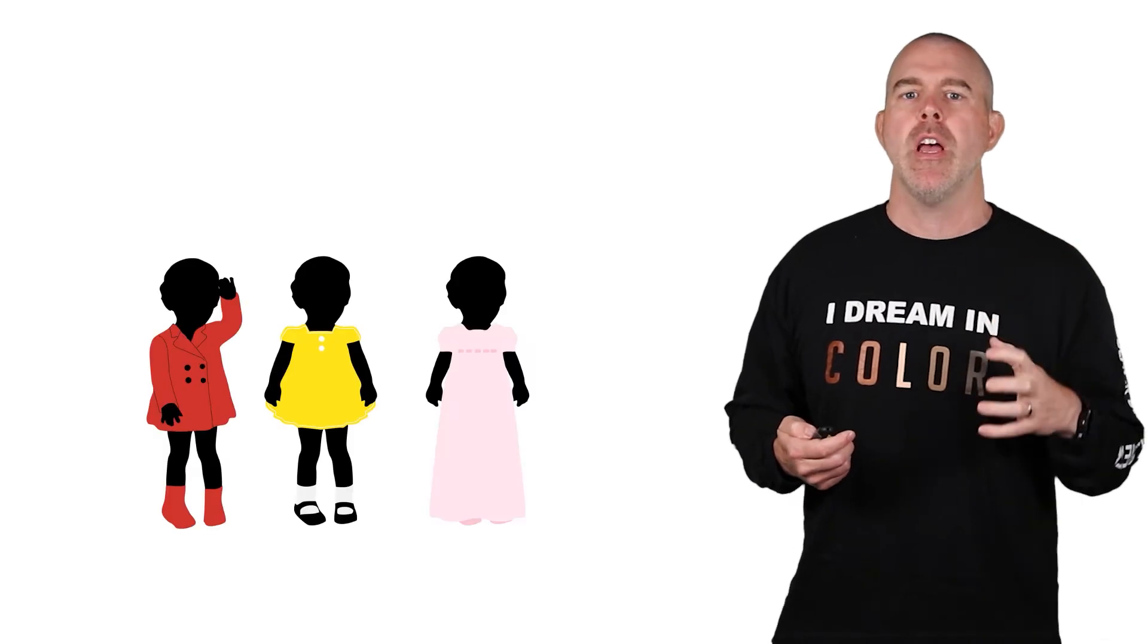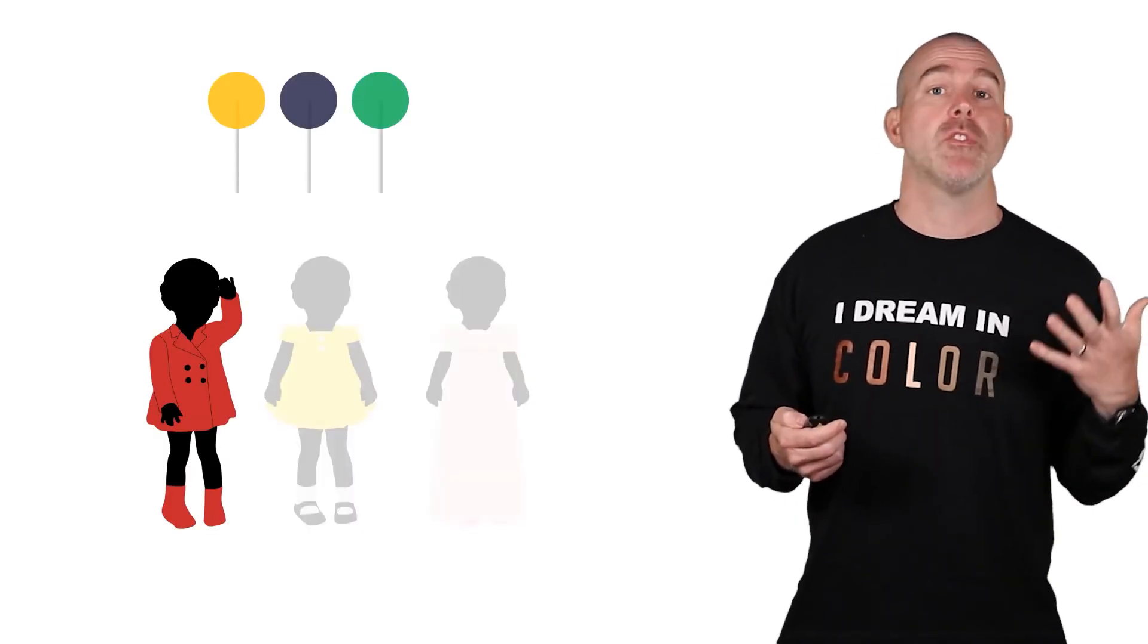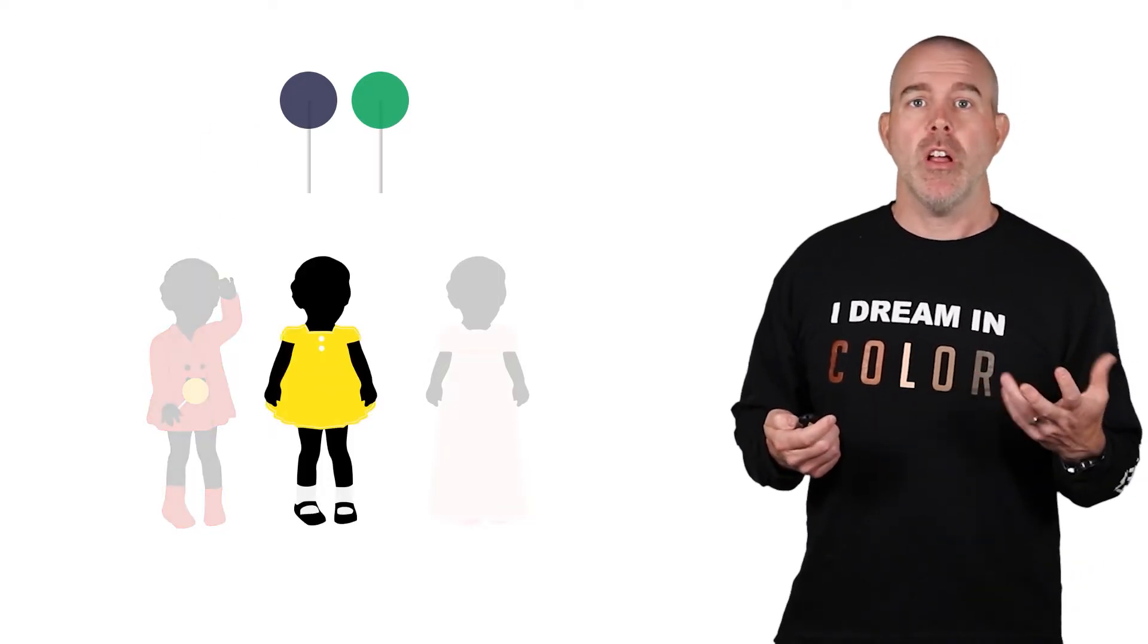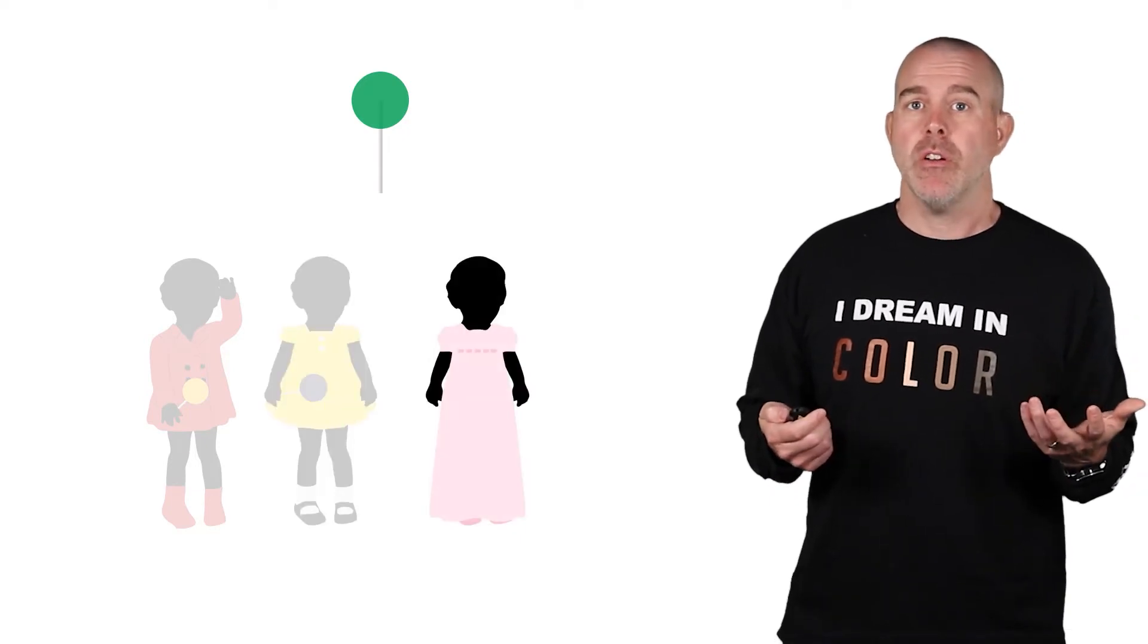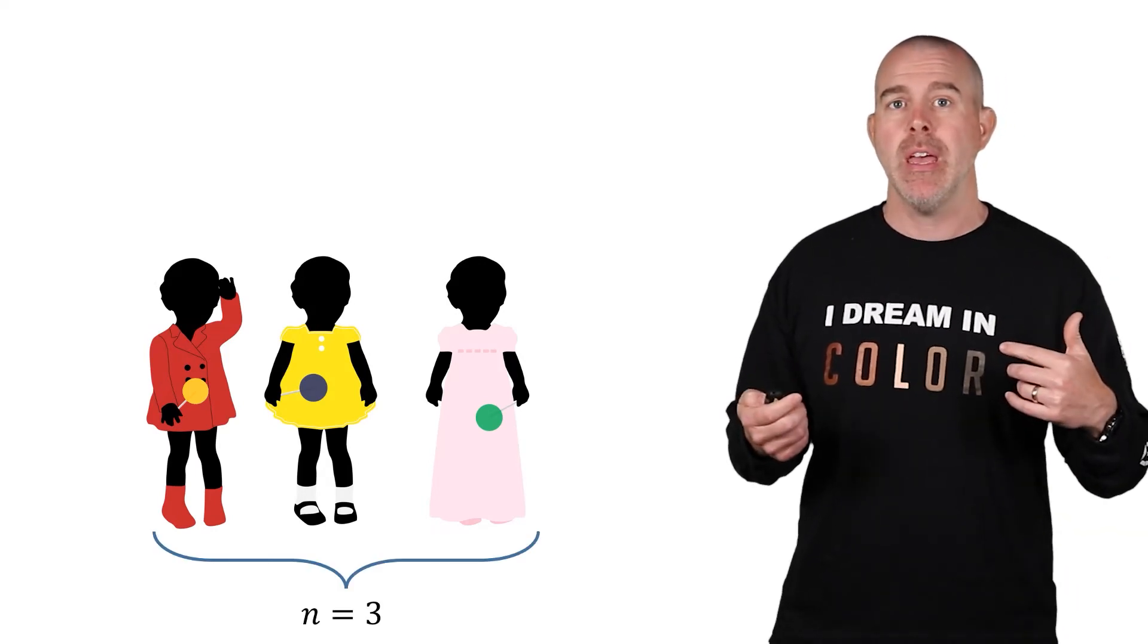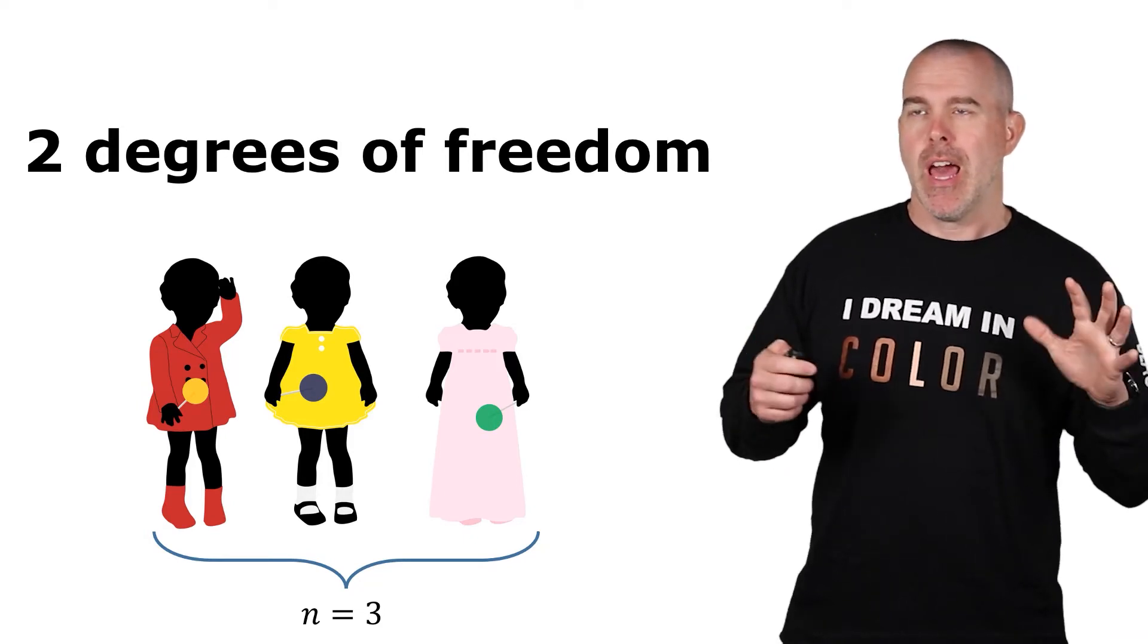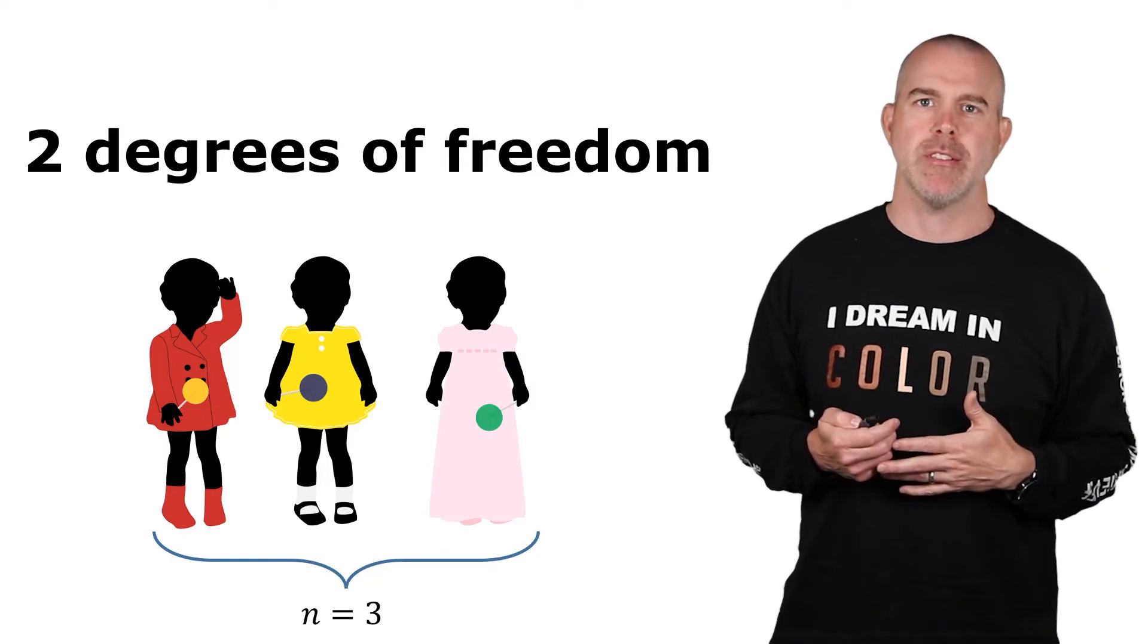Let me just refresh your mind about what roughly degrees of freedom means. So let's pretend we have three girls and we have three lollipops. So the first girl has three lollipops to choose from. She can choose one. Second girl has two to choose from. So she can choose one. But then the last girl, there's no freedom for her to choose. She has to pick that third one. So while we had a sample size of three, there were only two degrees of freedom. So that's kind of a very casual way to think about degrees of freedom. It's one less in this case than our sample size.